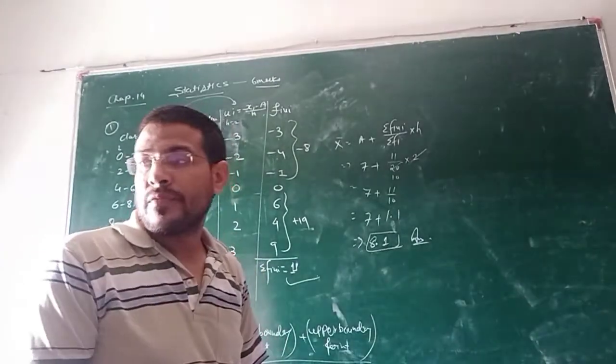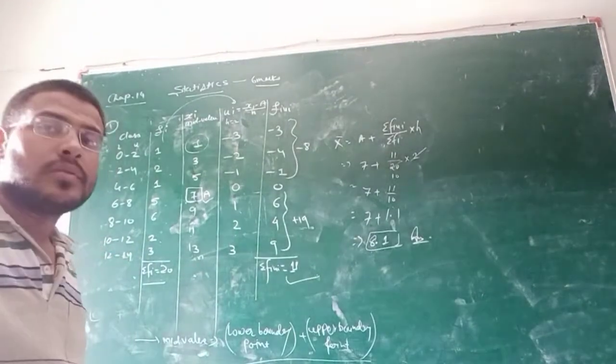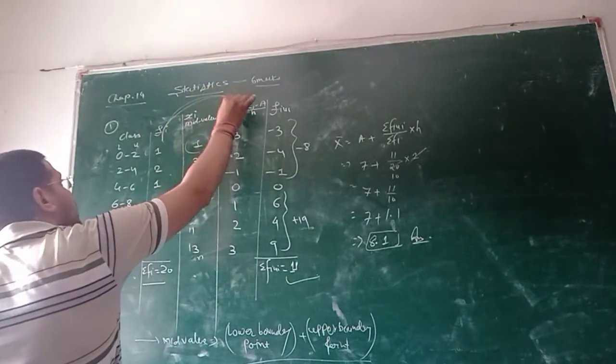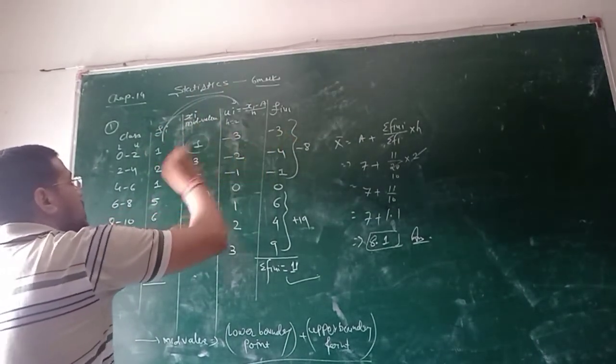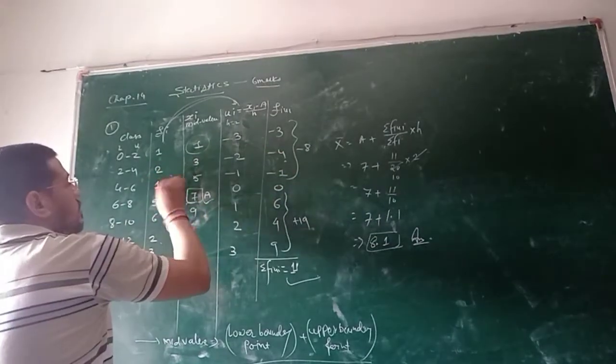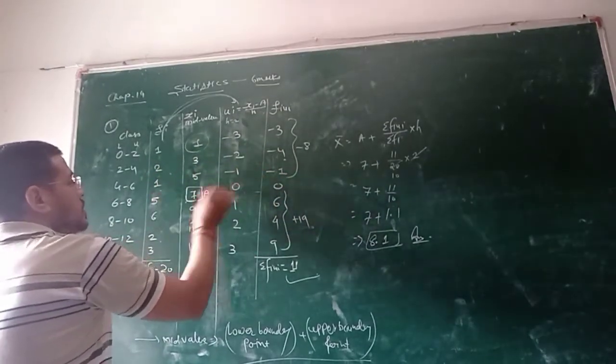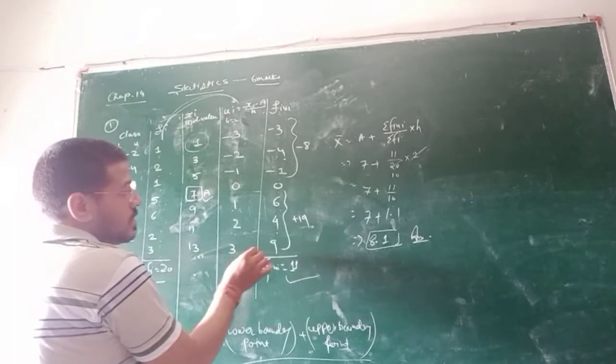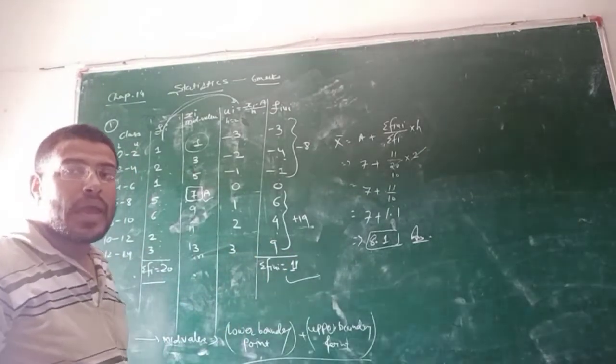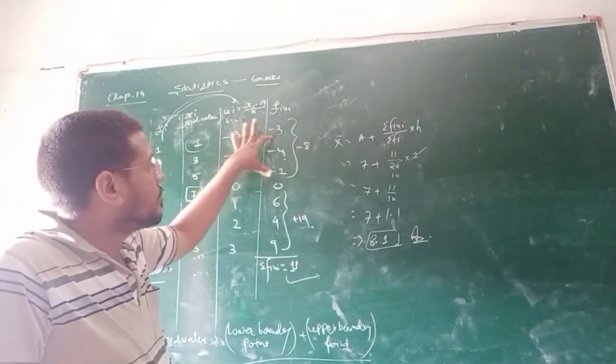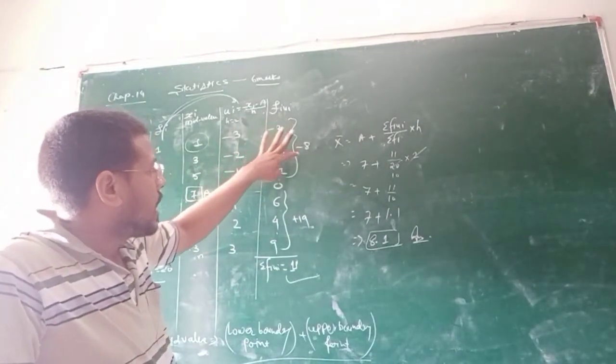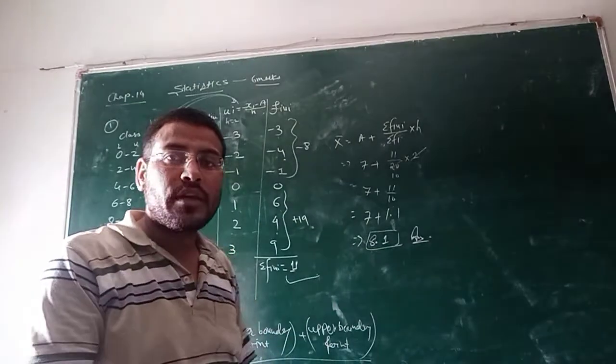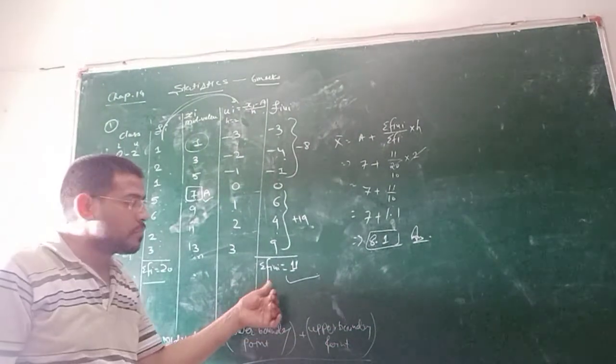After calculating ui, you can do the multiplication with fi and ui. So, 1 times 3 is minus 3, 2 times 2 is minus 4, 1 times 1 is minus 1. Same way, 6 times 1 is 6, 2 times 2 is 4, and 3 times 3 is 9. So, add all the negative values. First, 3, 4, 7, 1, 8. And 6, 4, 10 plus 9, 19. So, 19 minus 7 minus 8, you will get plus 11.